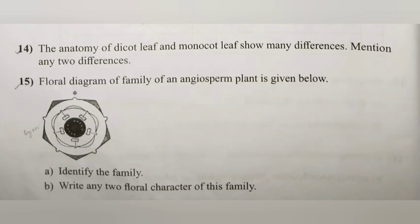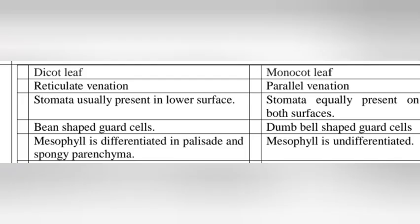Question 14: The anatomy of dicot leaves and monocot leaves shows many differences. Mention any two differences. Answer — Dicot leaves: reticulate venation; stomata usually present on the lower surface. Monocot leaves: parallel venation; stomata equally present on both surfaces.